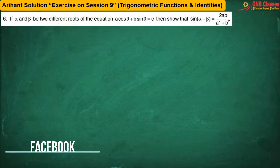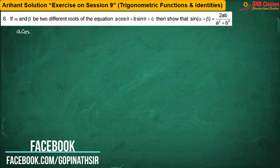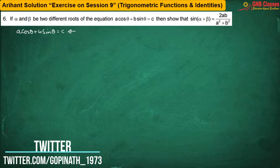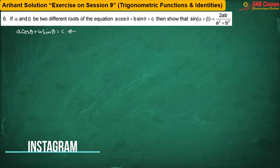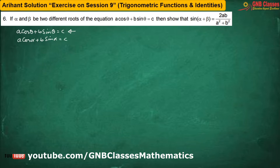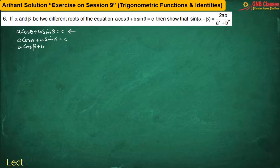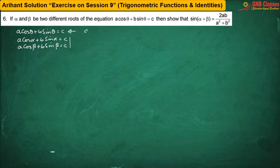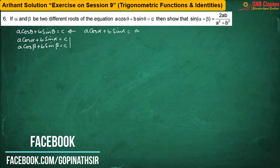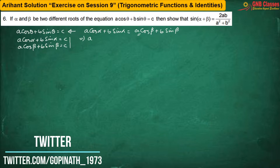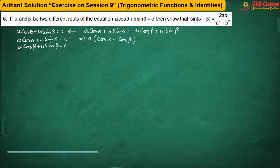Here, α and β are two different roots of the equation a·cosθ + b·sinθ = c. Therefore, α and β must satisfy this equation: a·cosα + b·sinα = c and a·cosβ + b·sinβ = c. Since both are equal, I am taking a·cosβ to the left hand side and b·sinα to the right hand side.